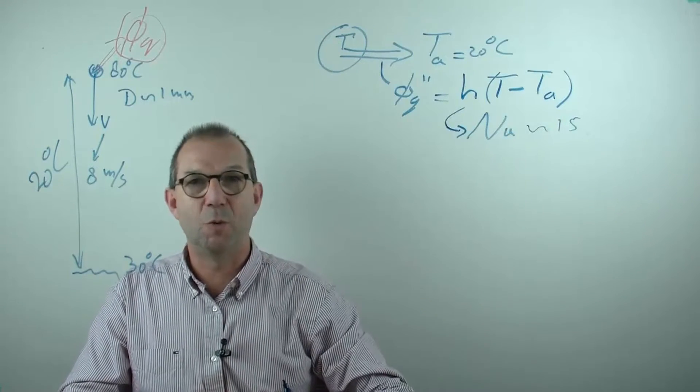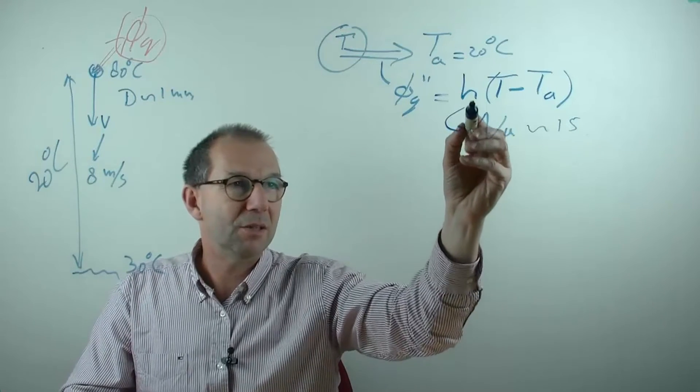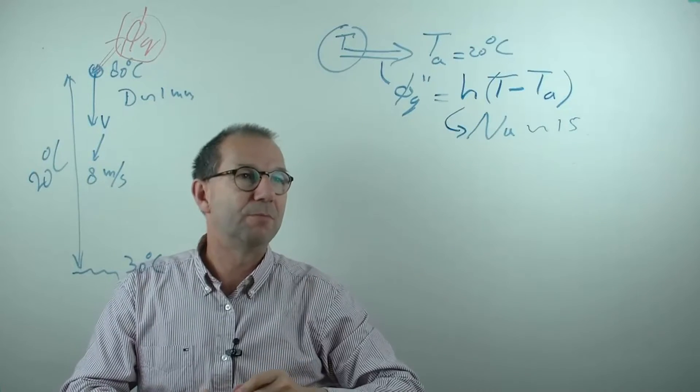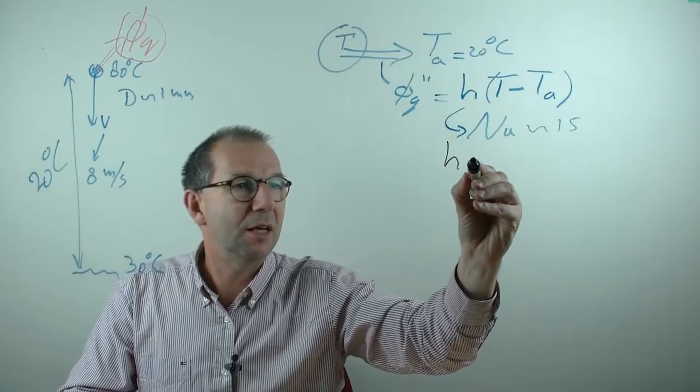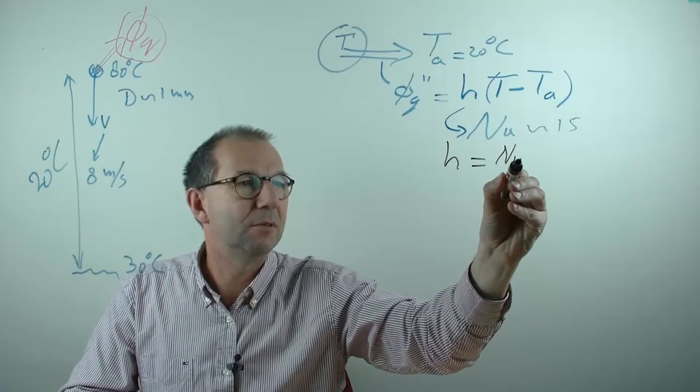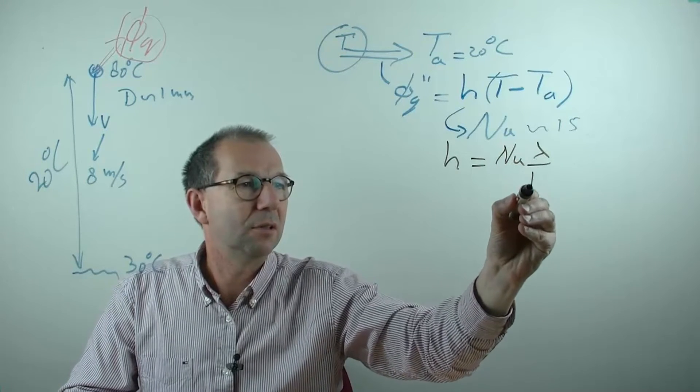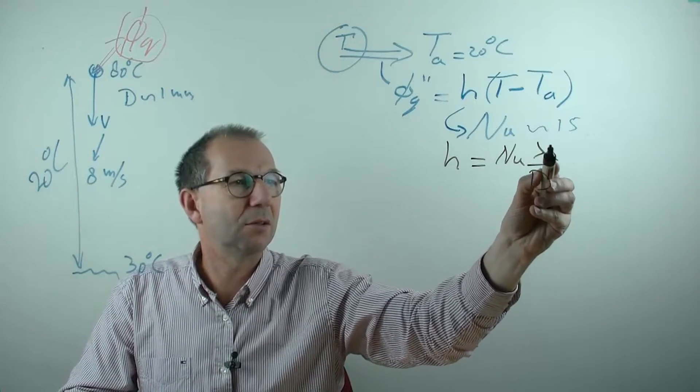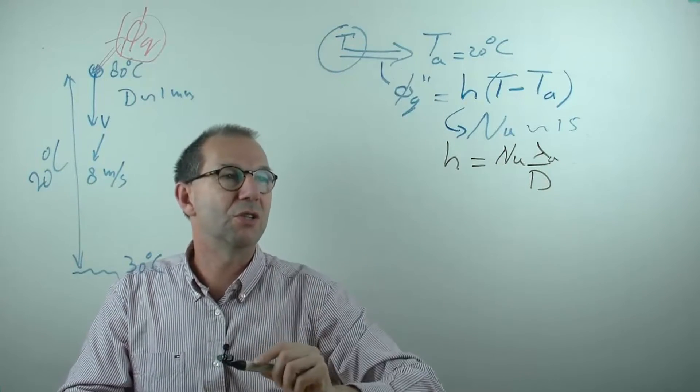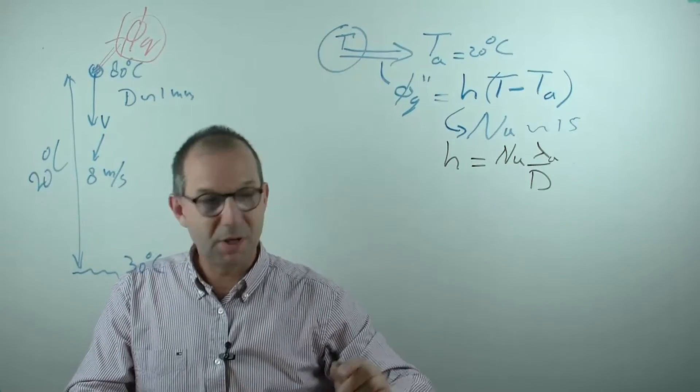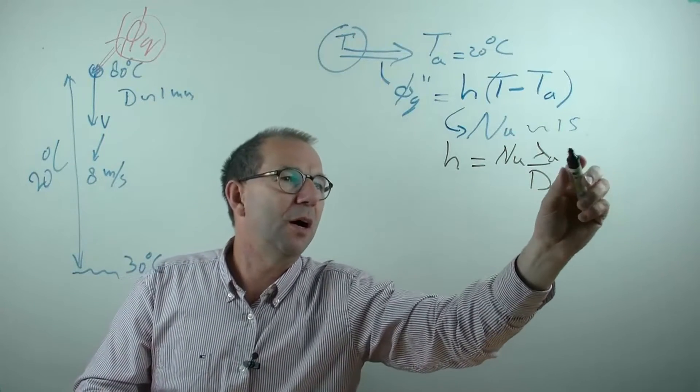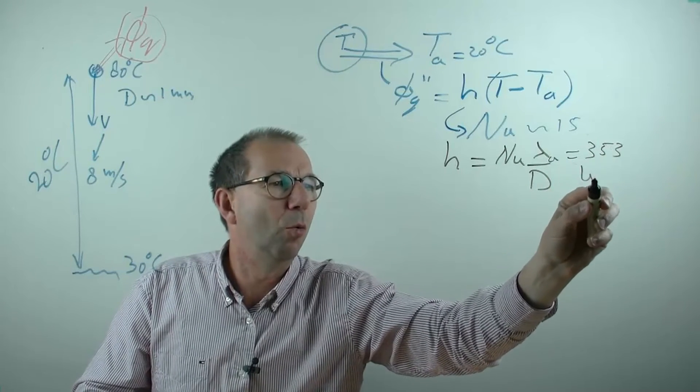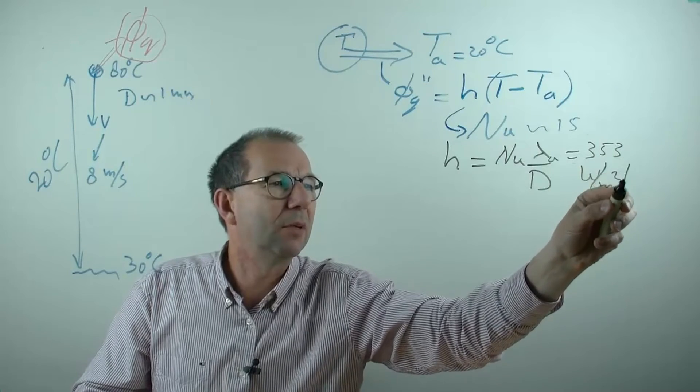Recall it's a dimensionless quantity, it's just a number. But I need to go back to h and therefore I use that h and Nusselt are related by this relation: Nusselt times lambda over D. And it's the lambda of the air because the flow resistance is in the air. And again I computed that for you. I found 353 watt meter squared Kelvin.